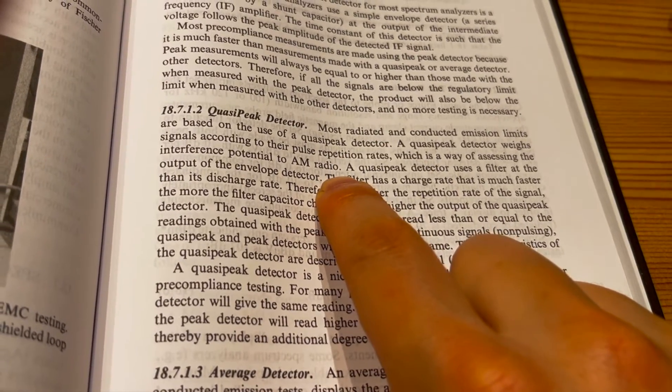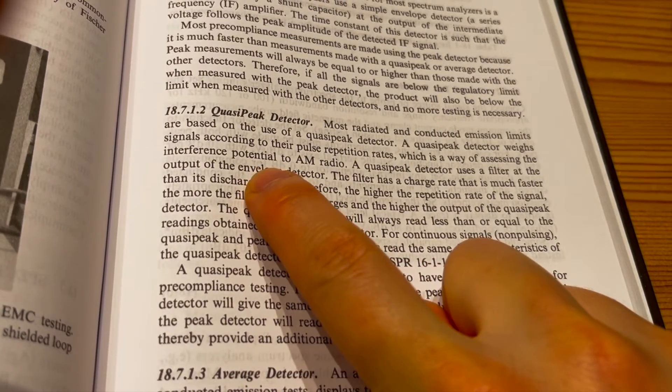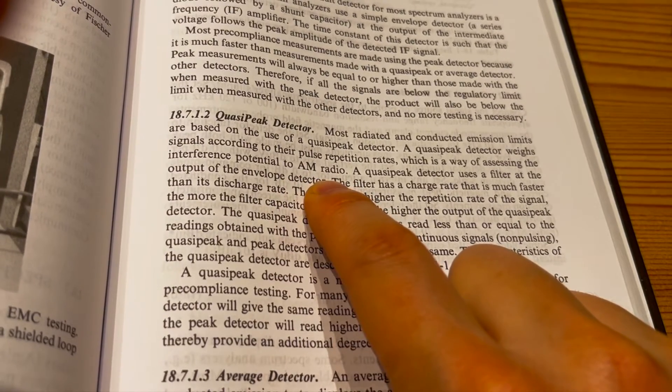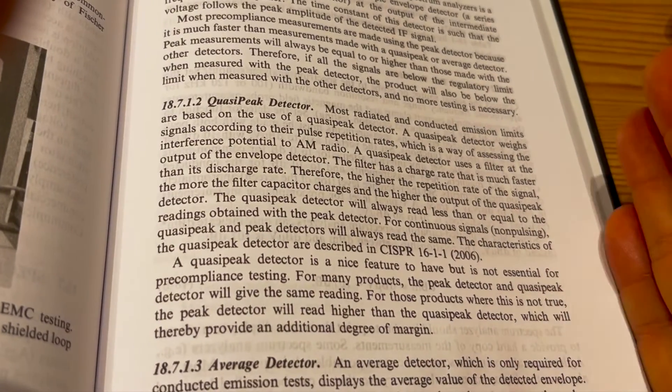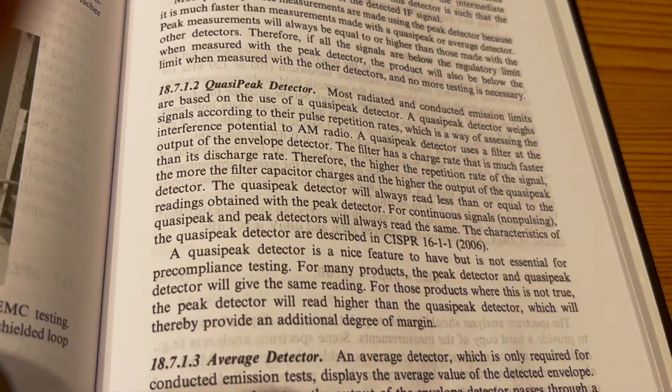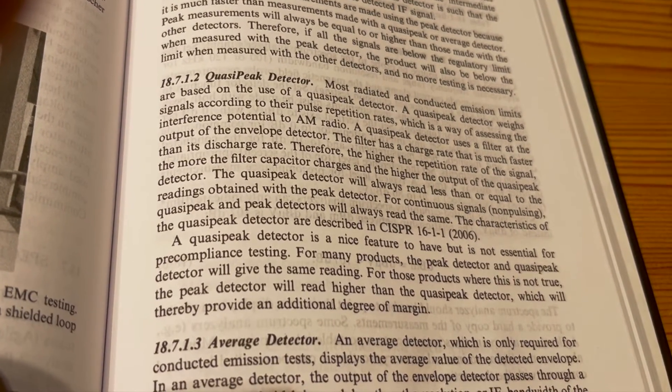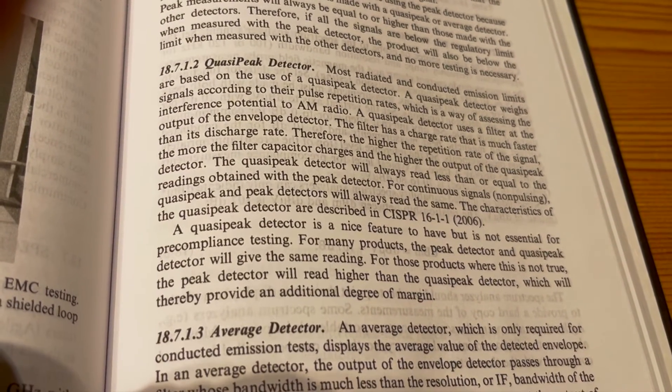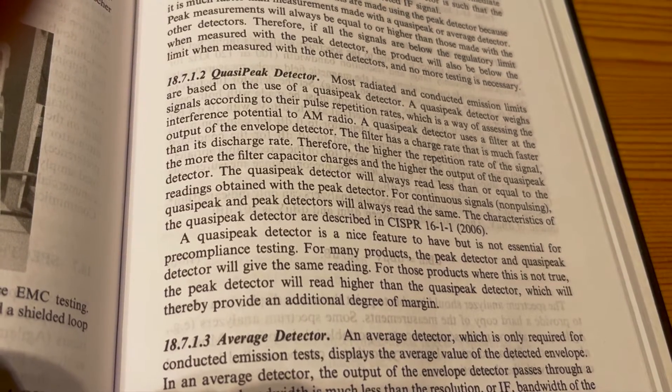So really that's the purpose of having a quasi-peak detector, is to assess the interference potential to AM radio. So we know that AM radio all operates in a very low frequency range, let's say they have the short wave or medium wave and long wave, roughly let's say one megahertz range.